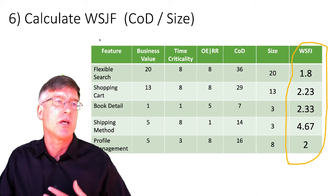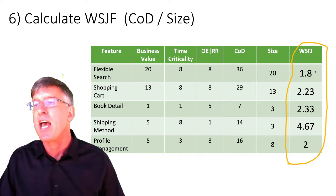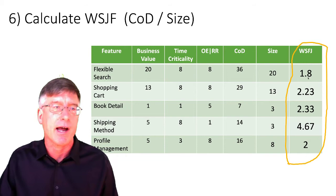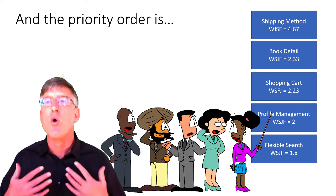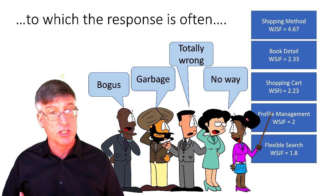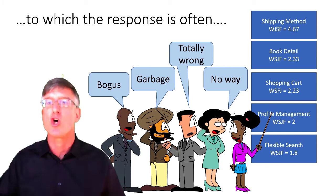Now we go through the calculation. We calculate WSJF — Weighted Shortest Job First — by dividing value by size, and we get our numbers. And guess which feature gets done first according to this? That is going to be shipping method. And look — our most valuable feature actually falls out last. So here is our priority order, the order we should be doing these features in. What do you think the reaction is? When I've done this exercise, this is almost always the reaction: 'What the bleep? No way. This is garbage. Bogus. Totally wrong.'